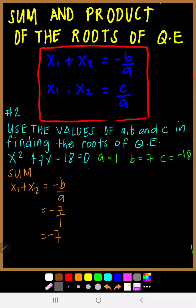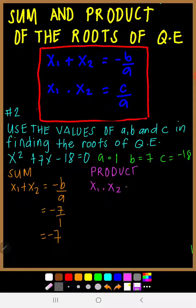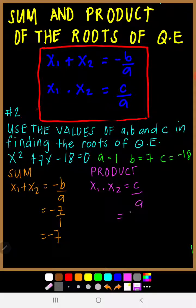For the product, x sub 1 times x sub 2 equals c over a. Our c is negative 18 and our a is 1. So negative 18 divided by 1 is negative 18.